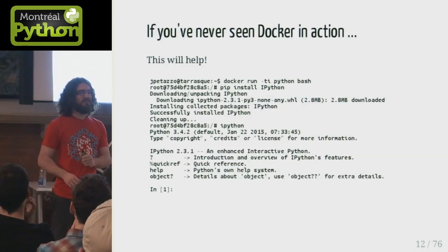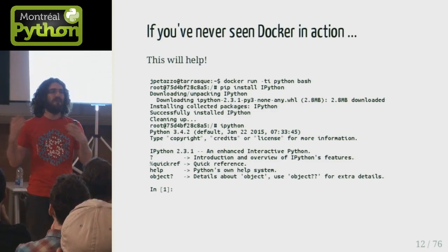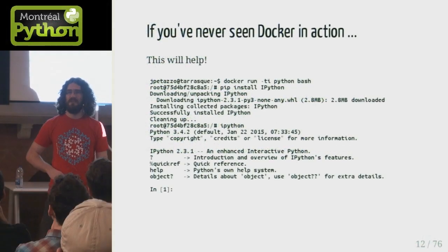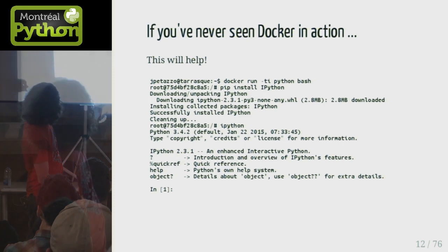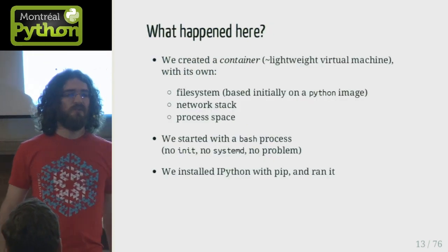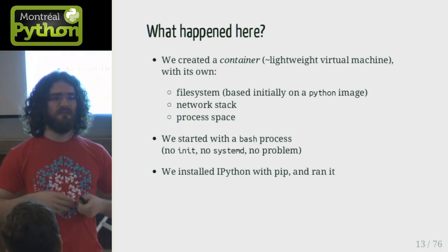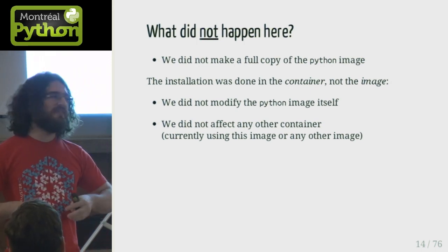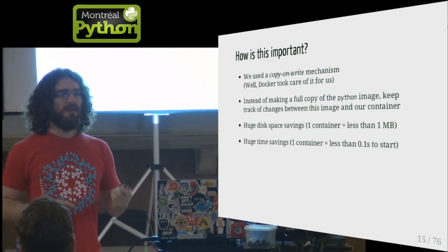So what's Docker? It's a platform to build and run containers. If you've never seen Docker in action, it looks like this: you do `docker run -ti python bash`, which means hey Docker, take the Python image, create a container out of it, and give me a bash shell. I then do `pip install IPython` — that's the Python package manager — and it downloads and installs IPython. What happened is I got a new container with a new file system as a copy of the Python image, my own network stack, my own process space. But what did NOT happen is we did not make a full copy of the Python image — we used a mechanism called copy-on-write.